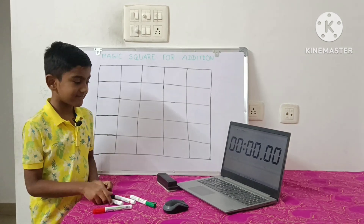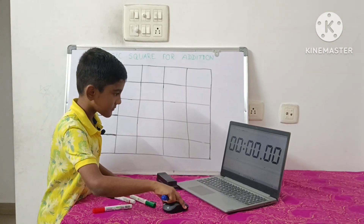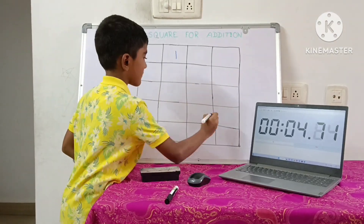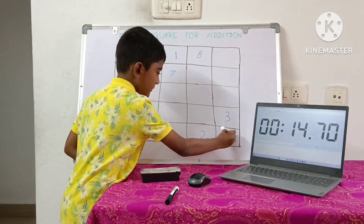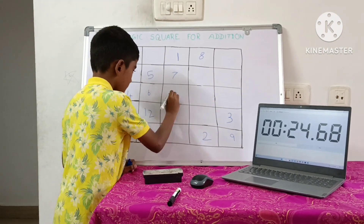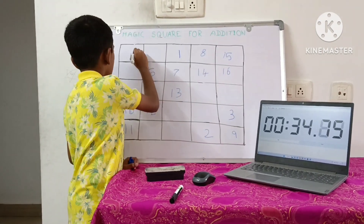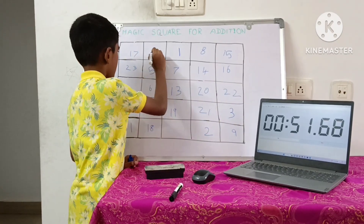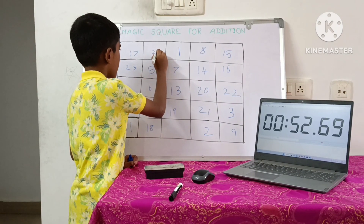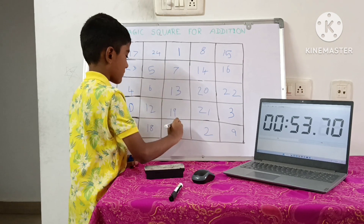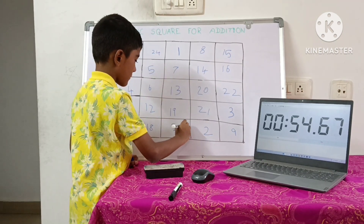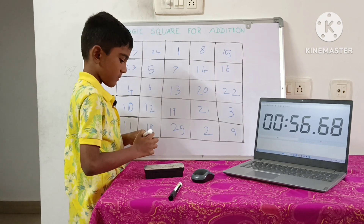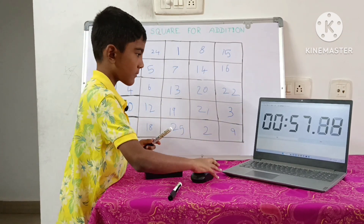Shall I start? Here I am solving a 5 cross 5 magic square — I took less than a minute to solve it. We can use the same logic to fill any odd number magic square, like 3 cross 3, 5 by 5, 9 by 9, and even 99 by 99.